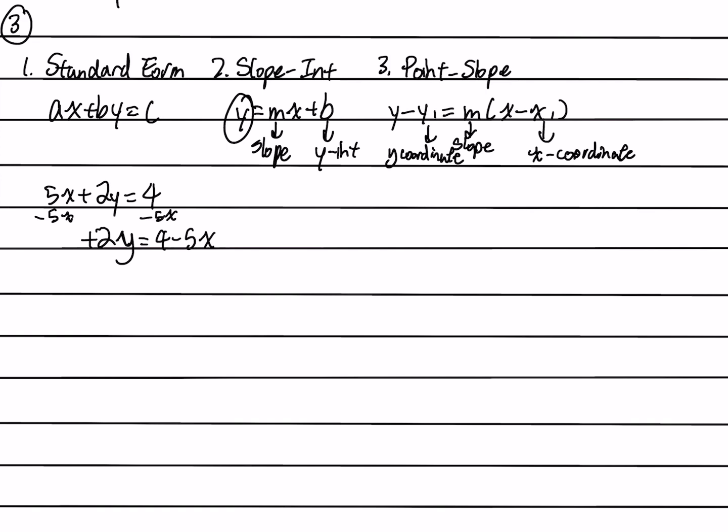Now you want to isolate y, so you want to get rid of this positive 2. So you divide 2 on both sides. You get y equals 4 divided by 2 is 2, and negative 5 over 2x.